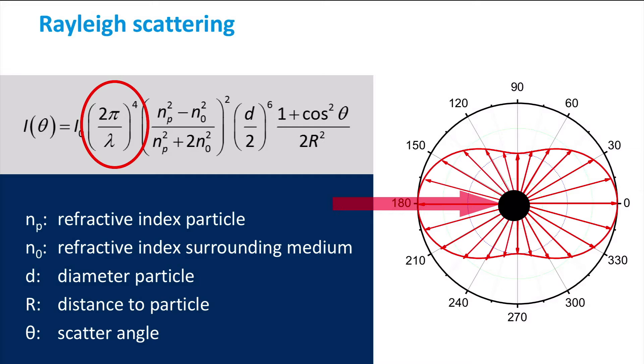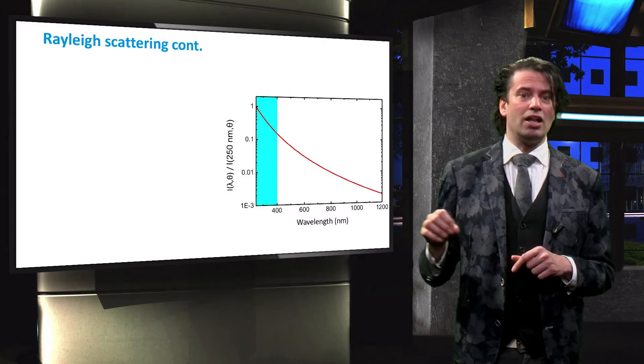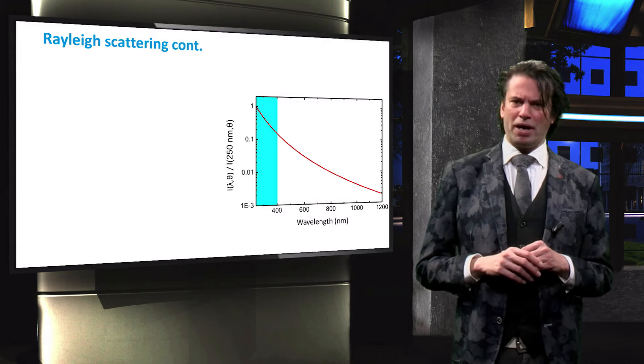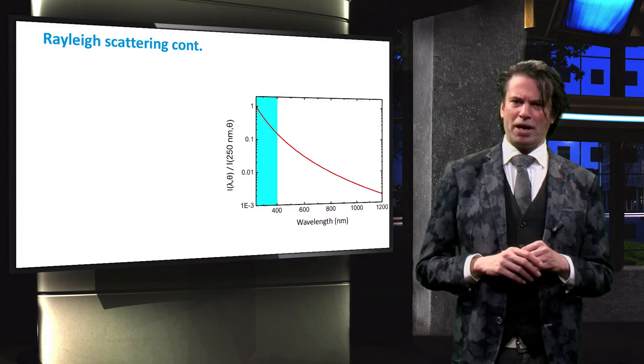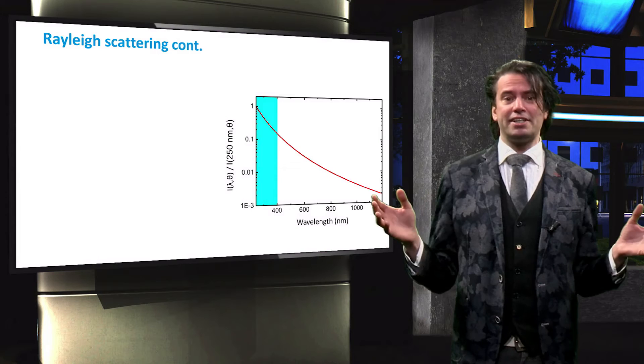This strong wavelength dependence of the scattering intensity is visualized by the Schoen graph. The y-axis shows the scattered intensity at a certain wavelength divided by the scattered intensity at the same angle at a wavelength of 250 nm. We can see that particles with a diameter much smaller than the wavelengths of the visible light are very effective at scattering blue light. It happens to be the case that the air in our atmosphere is full of Rayleigh sized particles like oxygen and nitrogen.